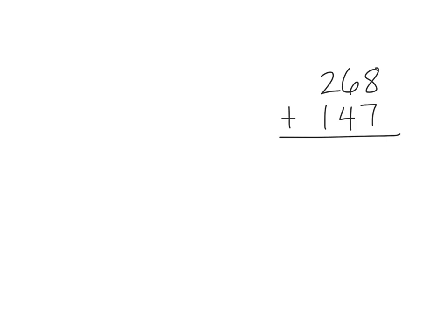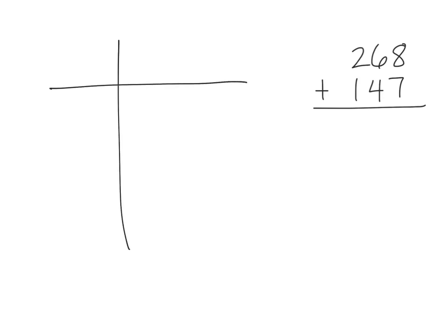So this video I'm going to show you how to use a thing called number disks to make addition, the traditional addition algorithm, visual so that you understand why we need to carry the one. Let's get started. We're going to add 268 plus 147 and we're going to do it the traditional way, but I'm going to use those number disks to demonstrate what is going on.